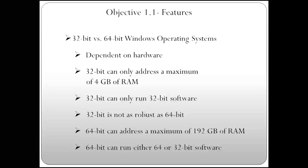A 64-bit operating system can address a maximum of 192 gigabytes of RAM. You'll usually only find that amount of RAM in a server. One of the good things about a 64-bit OS in the Windows world is you can run both 64-bit and 32-bit software. 64-bit operating systems are very backwards compatible — otherwise there would be a lot of upset people.